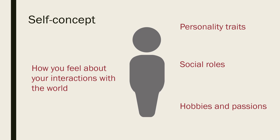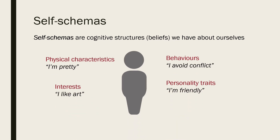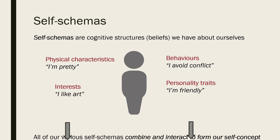A healthy self-concept promotes well-being, while a negative one can lead to emotional and social challenges. The term schema refers to the cognitive structures we have to describe various categories of knowledge about the world. Self-schemas are beliefs we have about ourselves and reflect how we expect ourselves to think, feel and act in particular settings or situations, as well as our overall perceptions of ourselves. Therefore, all our various self-schemas combine and interact to form our self-concept.